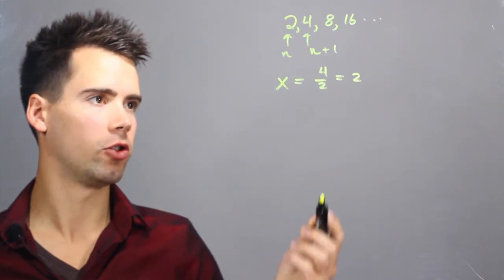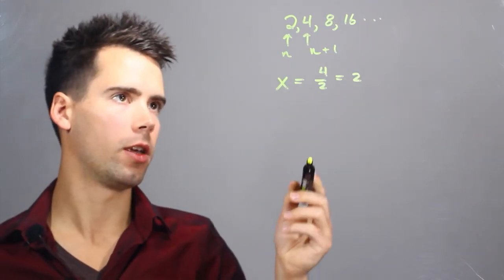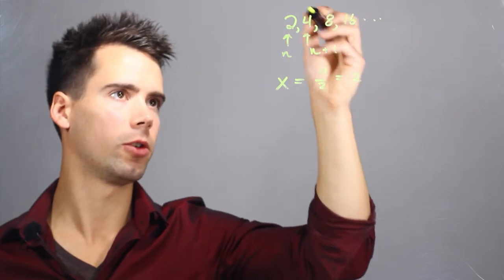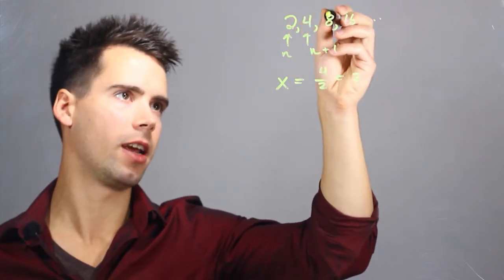And we find the geometric sequence is just 2, right, the ratio. And we can get to one term by multiplying by 2. So 2 times 2 is 4, 4 times 2 is 8, 8 times 2 is 16.